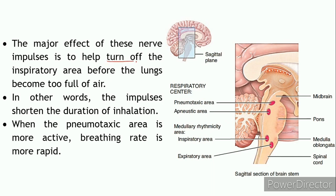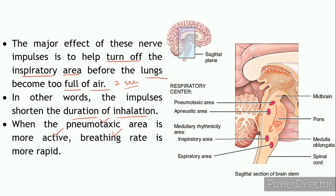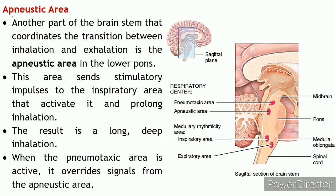The pneumotaxic area inhibits the inspiratory area before the lungs become too filled with air, preventing overinflation of the lungs. This is why inhalation stops after 2 seconds. If the pneumotaxic area is excessively active, inhalation is shortened below 2 seconds - the duration of inhalation and exhalation decreases, so the breathing rate becomes more rapid.